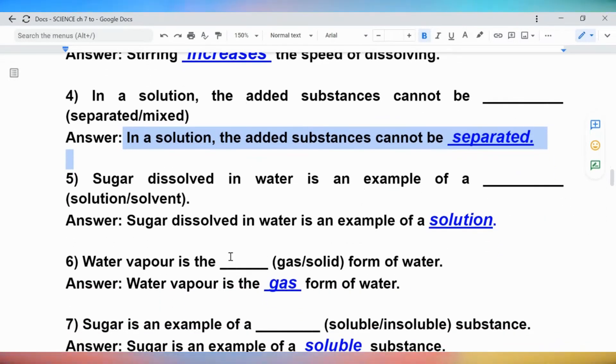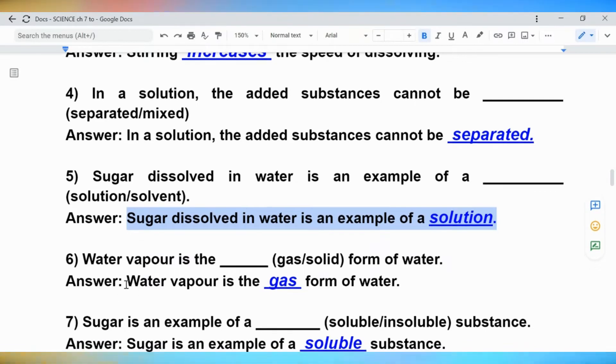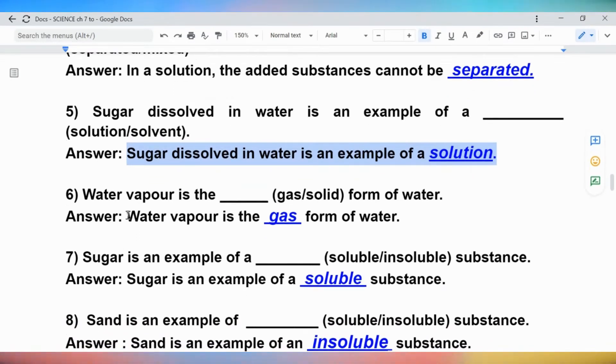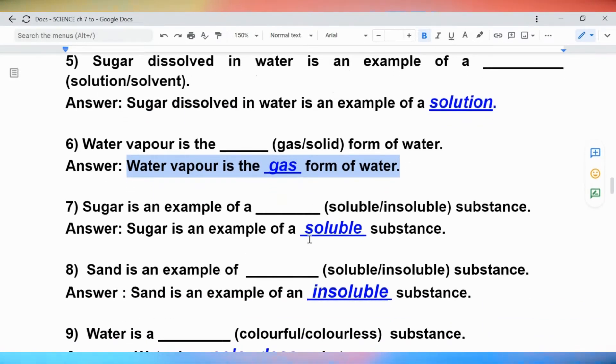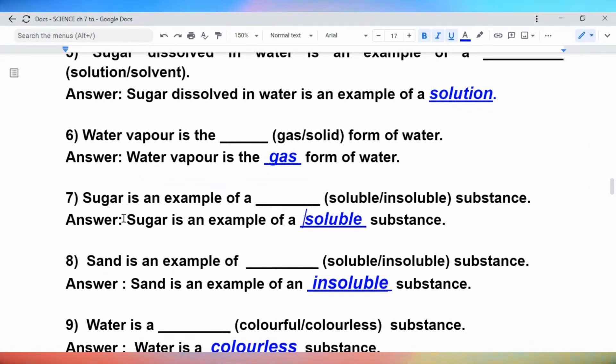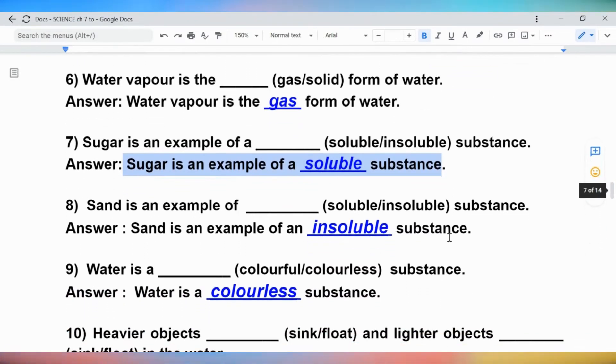Question 5: Sugar dissolved in water is an example of blank (solution or solvent). Answer: Sugar dissolved in water is an example of a solution. Question 6: Answer: Sugar is an example of a soluble substance.